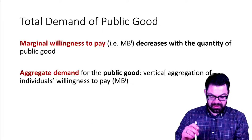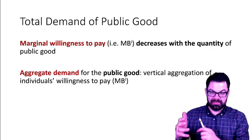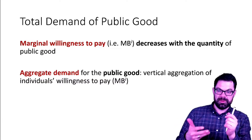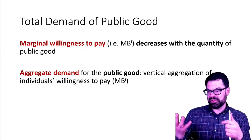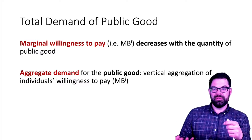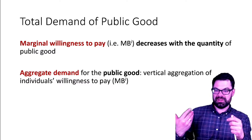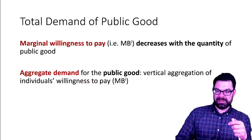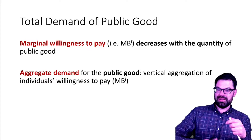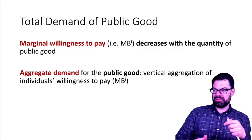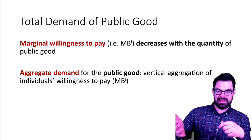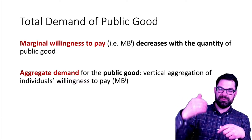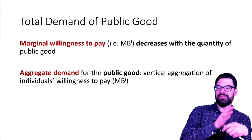Just as with private goods, the marginal willingness to pay for a good decreases with the quantity of the public good. You can imagine this with police patrols: if you live in a neighborhood where crime happens occasionally, you would obviously benefit from having police patrols. But going from zero to one patrol is probably more beneficial to you than going from already 10 patrols per day to 11. So you have a higher marginal willingness to pay for the first patrol rather than the 11th, 12th, or 13th.